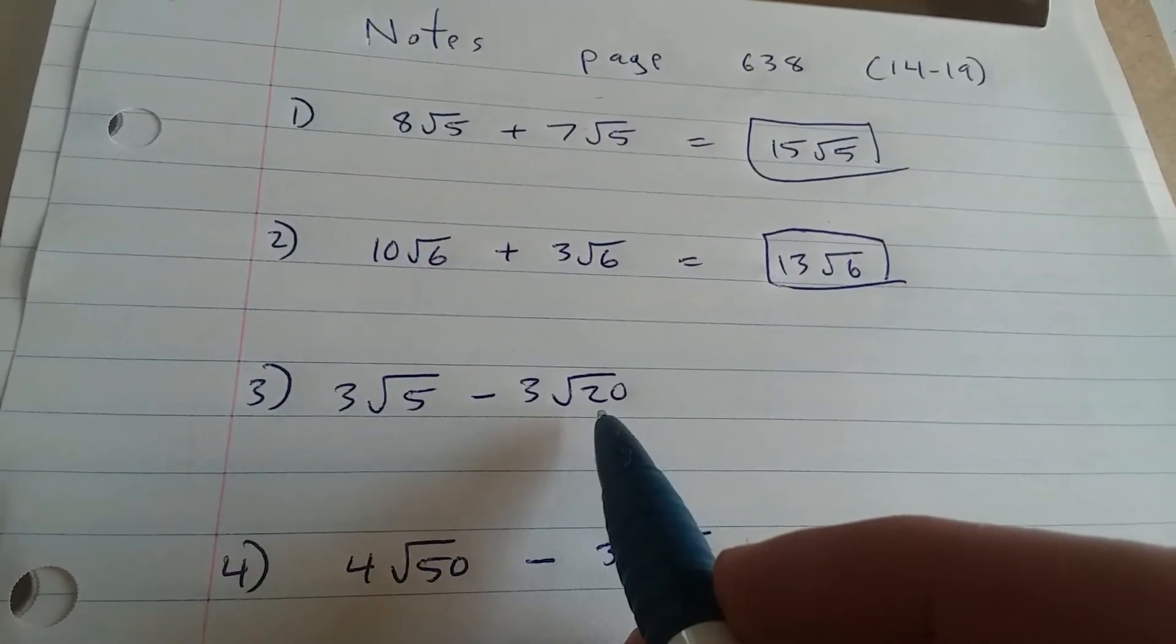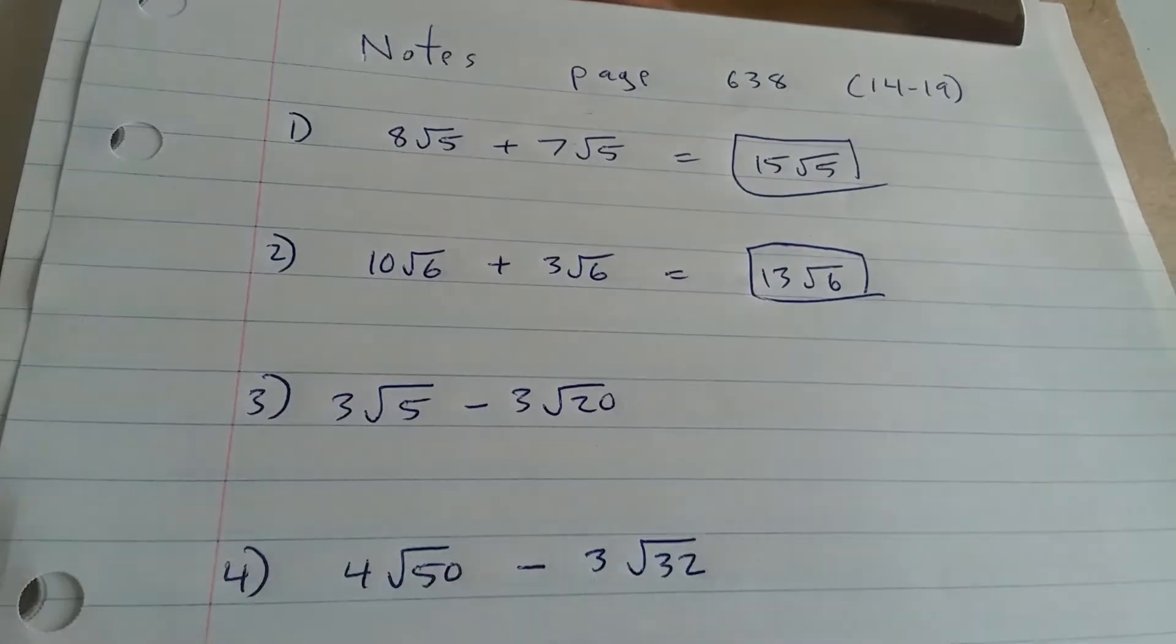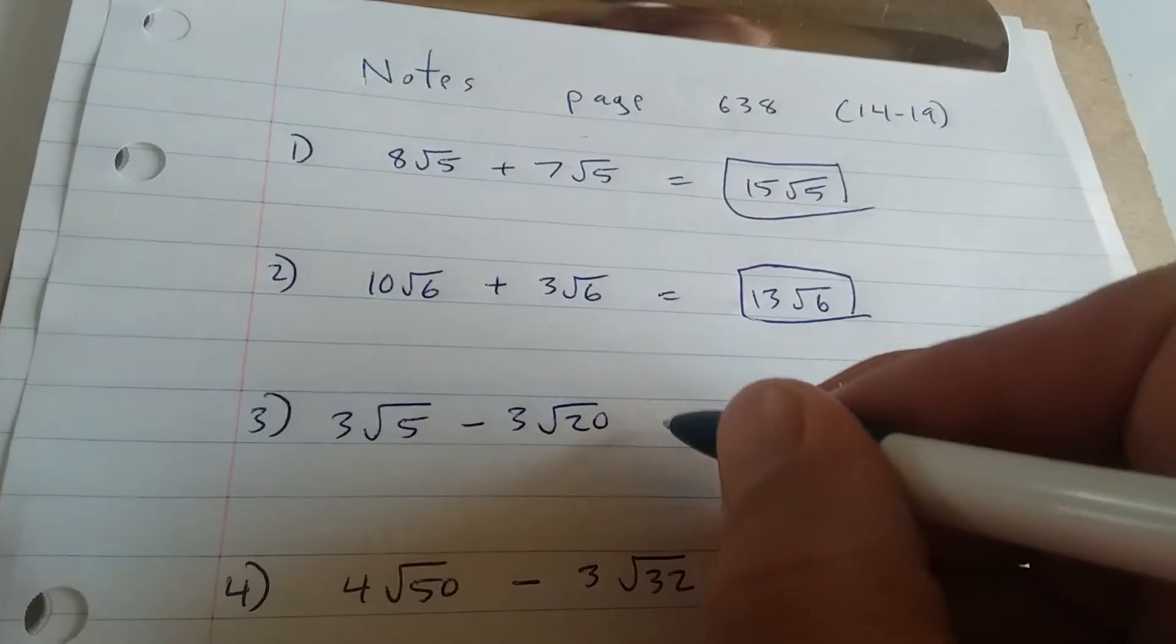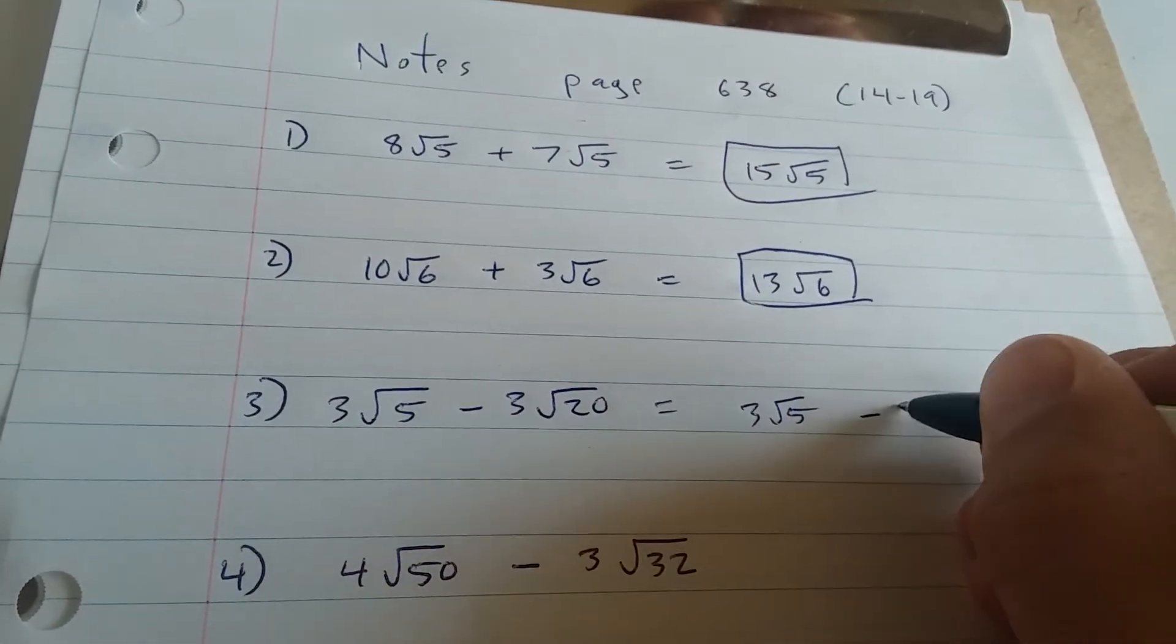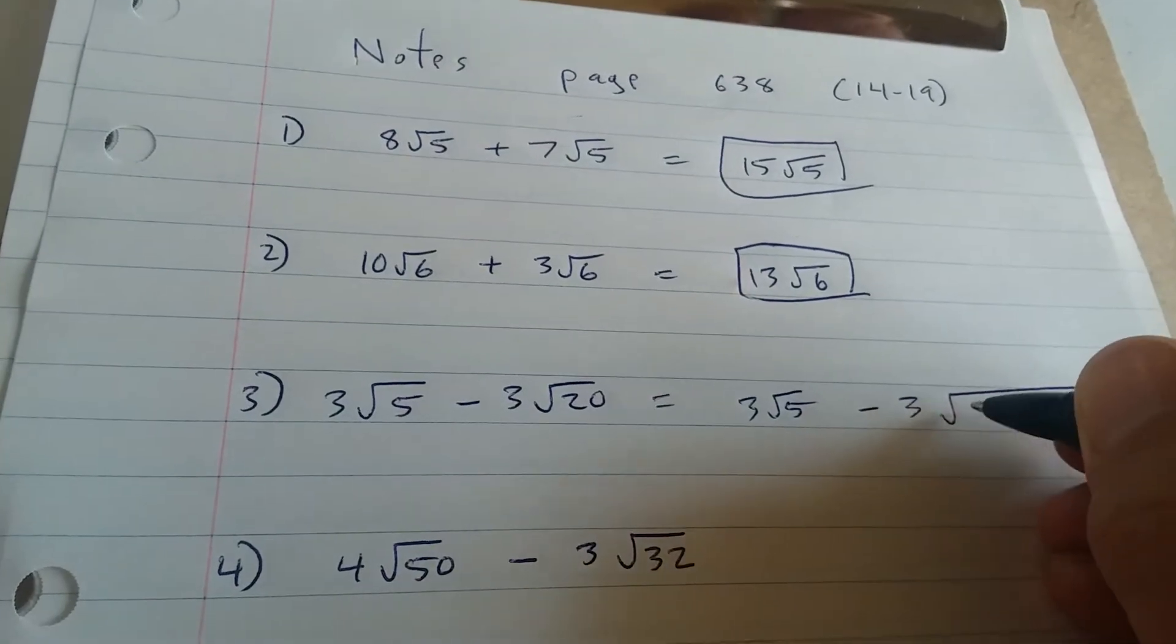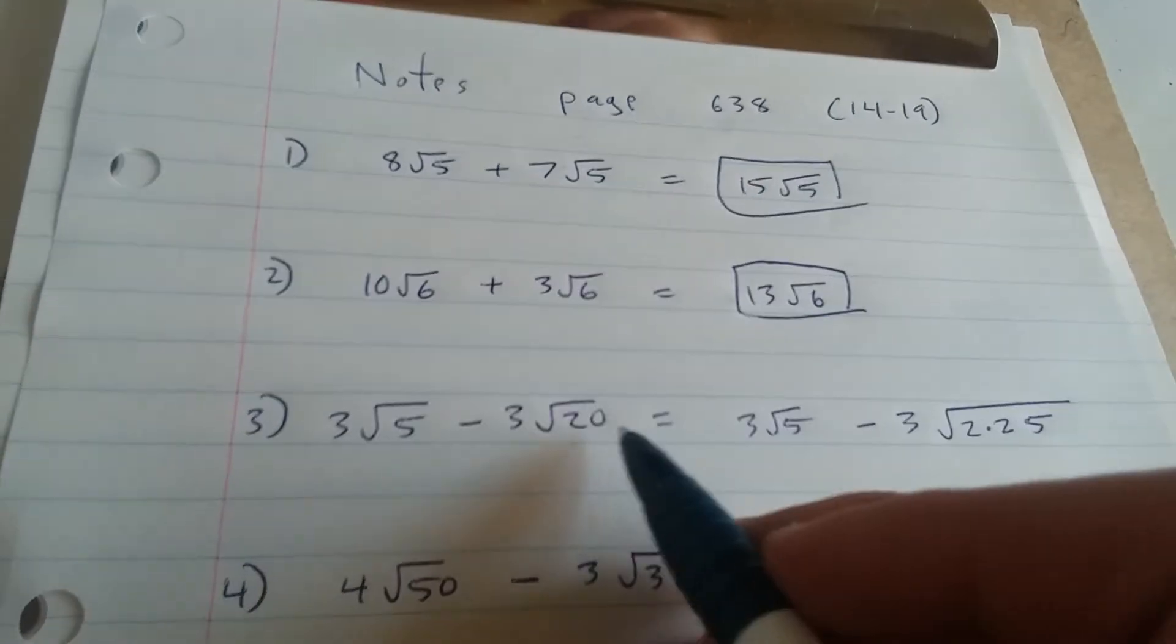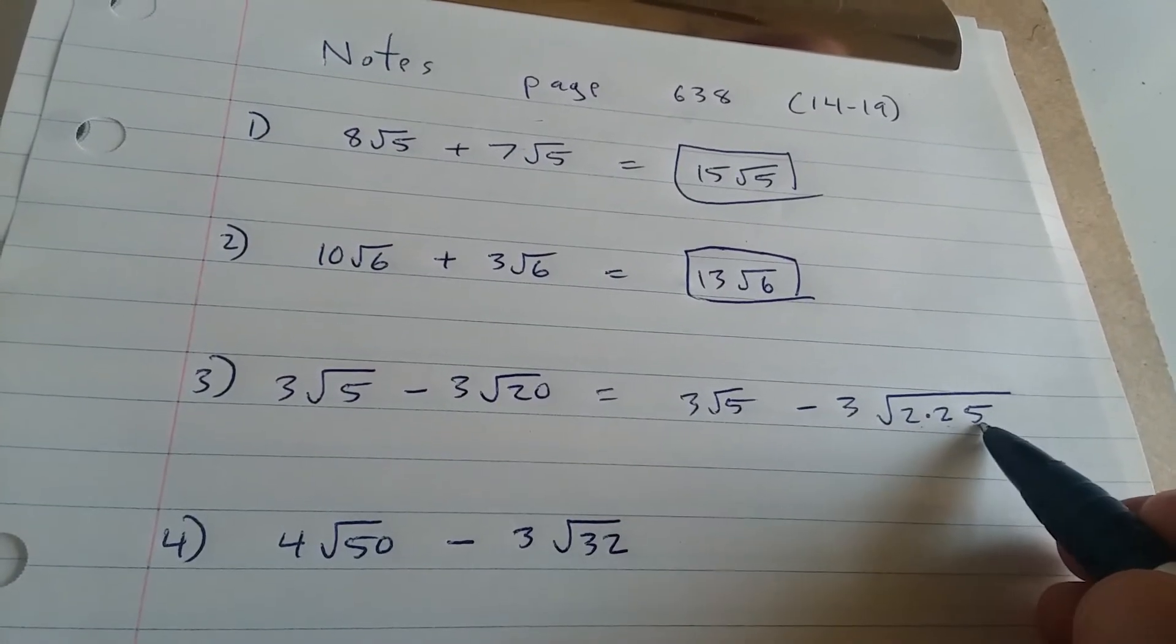Here's our next example, 3 root 5 minus 3 root 20. Notice that what's under the root does not match, so we're going to have to rewrite it so they do match. Notice that 20, this is the same thing as 3 root 5 minus 3 times the square root of 2 times 2 times 5. 20 is 2 times 2 times 5. 2 times 2 is 4, 4 times 5 is 20.